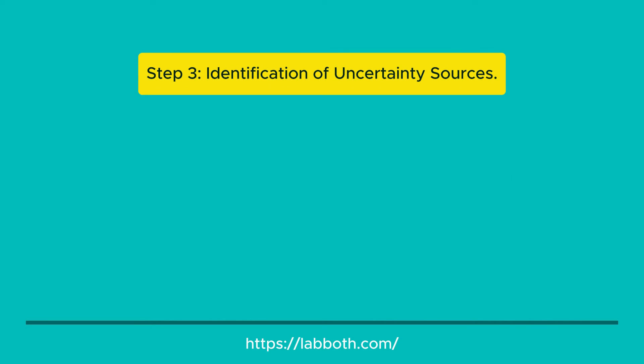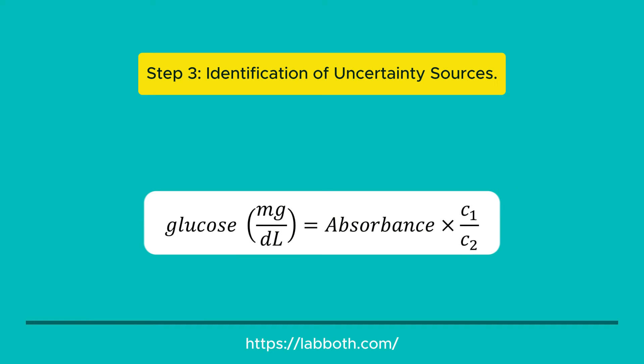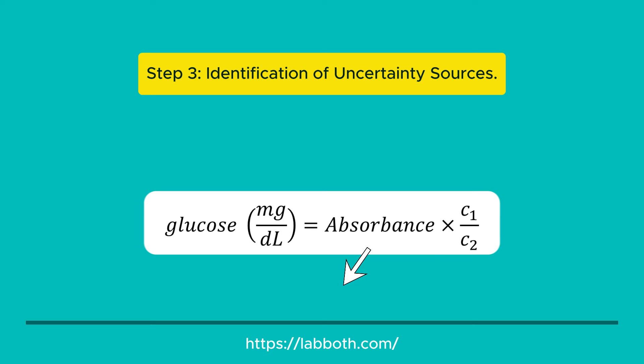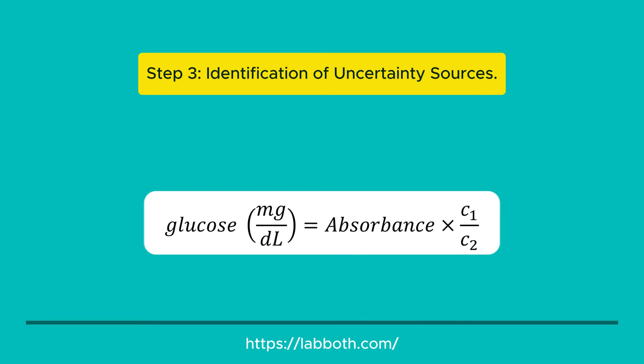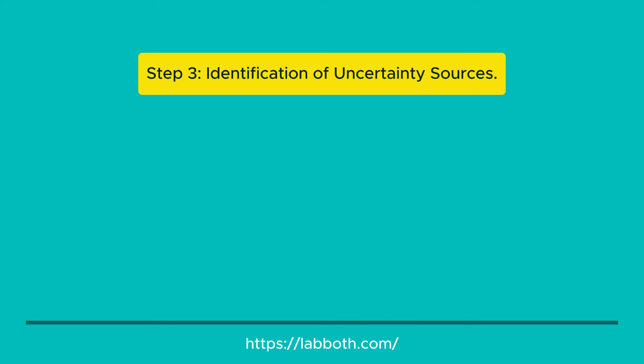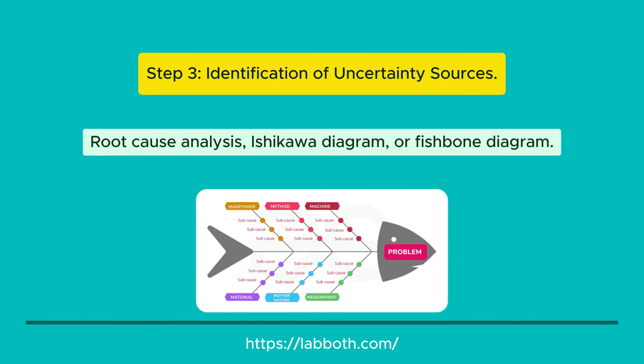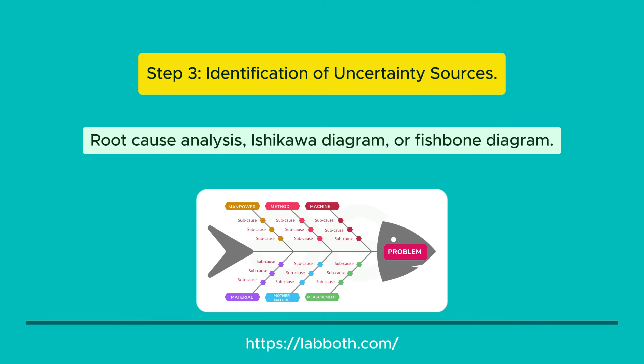Step 3: Identification of Uncertainty Sources. Once you have the measurement model, proceed to identify the sources of uncertainty. Start by identifying the input magnitudes of your measurement model, as each input magnitude is a source of uncertainty. These input magnitudes may in turn have secondary sources. To properly identify sources of uncertainty, I recommend conducting a root cause analysis using an Ishikawa diagram, or fishbone diagram. This diagram allows you to identify and organize the sources of uncertainty in the measurement system.